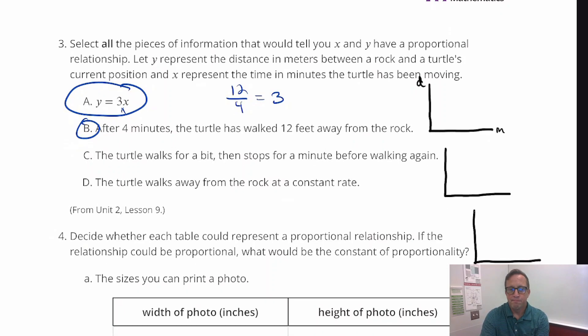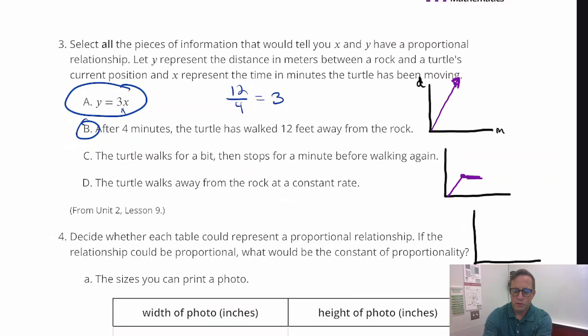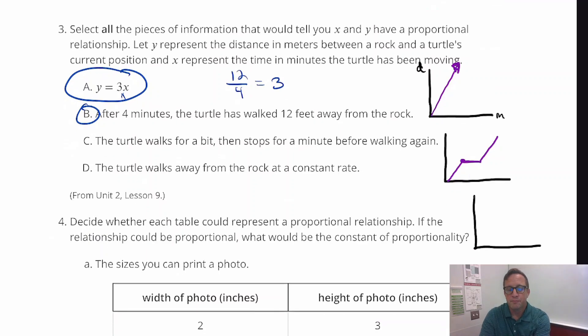See, the turtle walks for a bit. I'm just making a hacky graph here, but maybe for B it would look something like this. And then for C, it says the turtle walks a bit. So it walks, walks, walks. And then it takes a rest, then it takes a break. And time doesn't stop, so that stays horizontal until that turtle starts moving again. So that's what that's going to look like. And you can tell right there, that is not linear. It starts at the origin, it's got linear parts to it, but the whole thing is not linear. So for C we can cross that one off. That one's definitely not proportional.